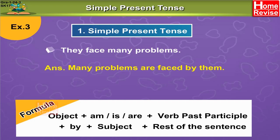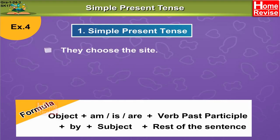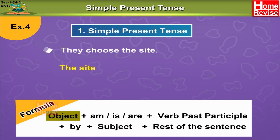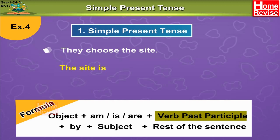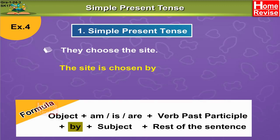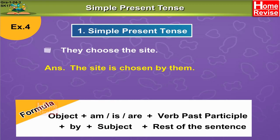Let's take another example. They choose the site. What is the object? What do they choose? The site. So the site is the object. It is followed by the to be form of the verb 'is' — past participle of choose is 'chosen' — by them. They is the subject, so the objective case of they is them. So your answer is: the site is chosen by them.